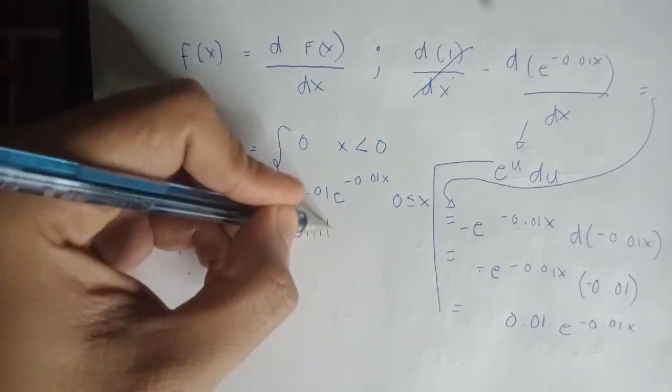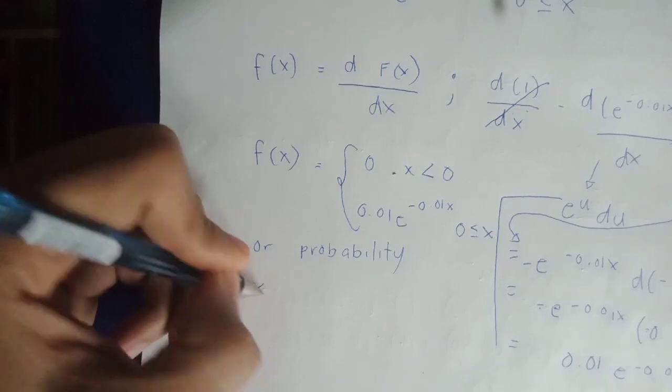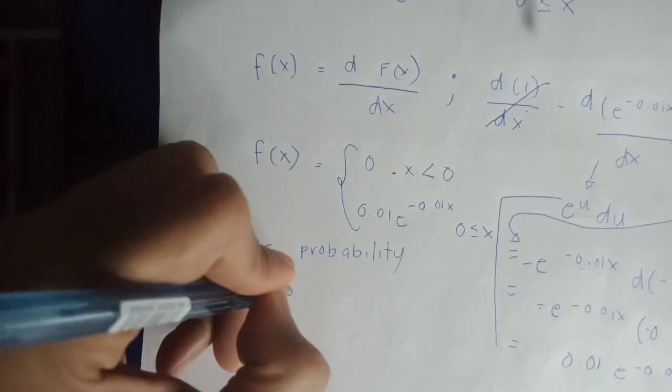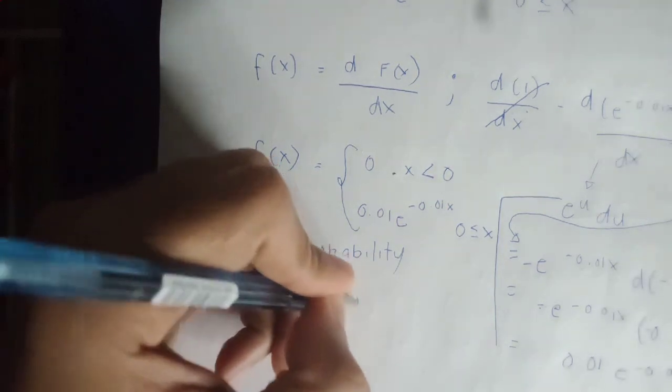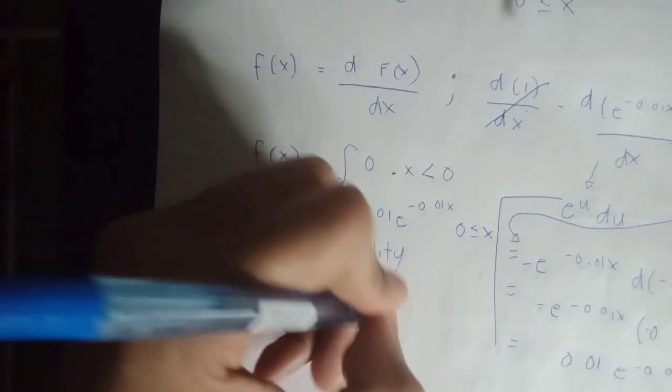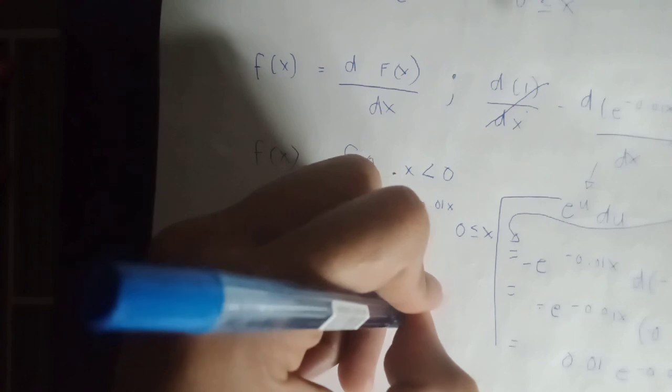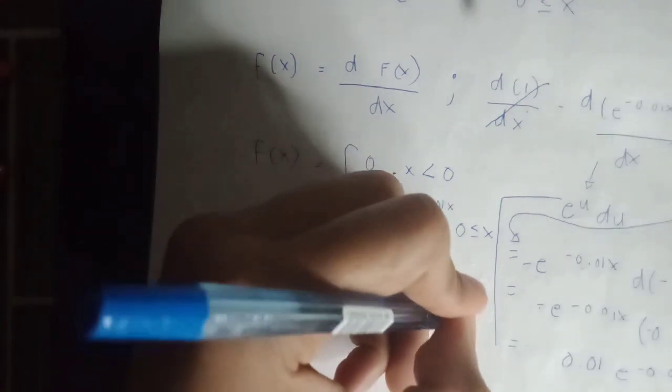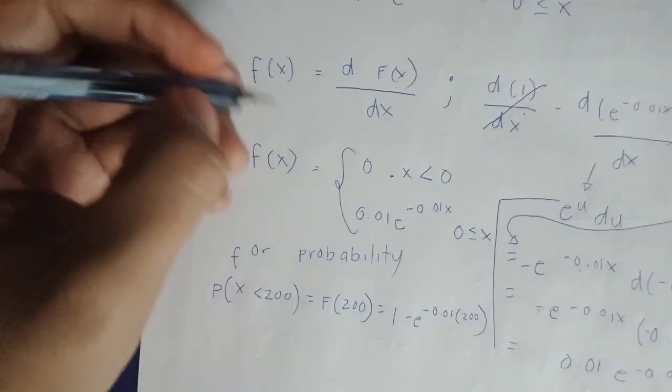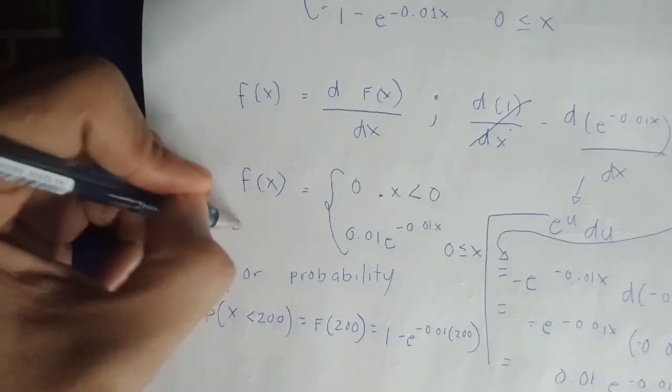Probability x less than 200 equals function of 200 equals 1 minus e raised to negative 0.01 times 200. Yung x natin is 200, multiply yun sa 200. X equals 200.